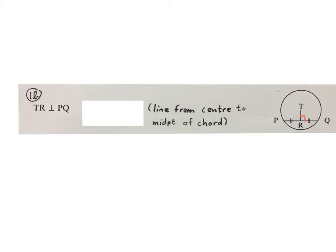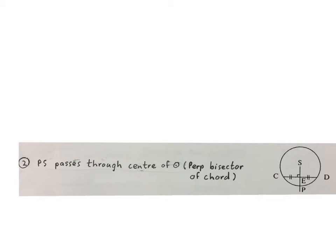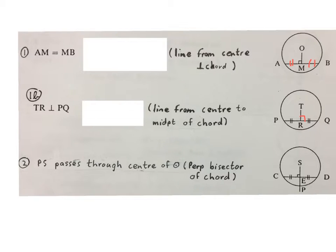Your statement then will be TR is perpendicular to PQ and your reason will be line from center to the midpoint of the chord or you can say line from center bisecting the chord. Our next theorem is we have a line that is perpendicular through a chord and it breaks the chord into two equal pieces. We call it a perpendicular bisecting the chord. My statement then is PS passes through the center of the circle. Your reason is a mouthful perpendicular bisector of chord. Please stop the video and look at this again. Then, these three are totally related.